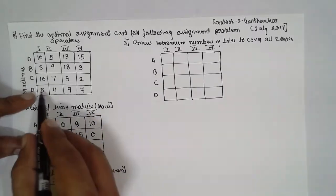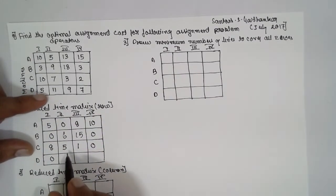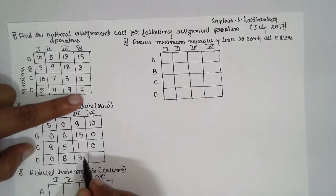The smallest is 7 here, sorry, smallest is 5. 5 minus 5 is 0, 11 minus 5 is 6, 9 minus 5 is 4, 7 minus 5 is 2.